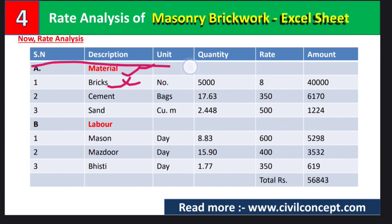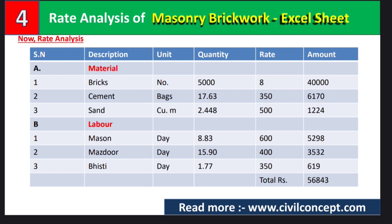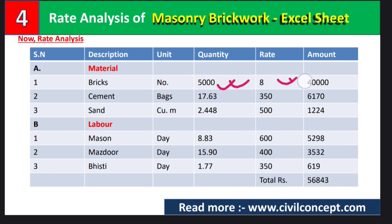Now let us look at the rate analysis table. The columns are: serial number, description, unit, quantity, rate, and amount. For bricks: unit is number, quantity is 5000, and rate is rupees 8 per brick, giving an amount of rupees 40,000. The number of cement bags required is 17.63 bags.